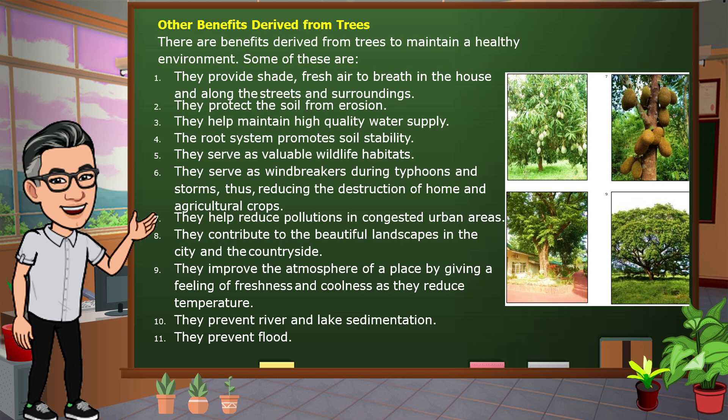The root system promotes soil stability. They serve as valuable wildlife habitats. They serve as windbreakers during typhoons and storms, thus reducing the destruction of home and agricultural crops. They help reduce pollution in congested urban areas.